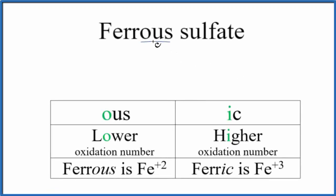So in this video we'll write the formula for ferrous sulfate. What we need to realize is that this is an older naming system. The new name for this is iron 2 sulfate.